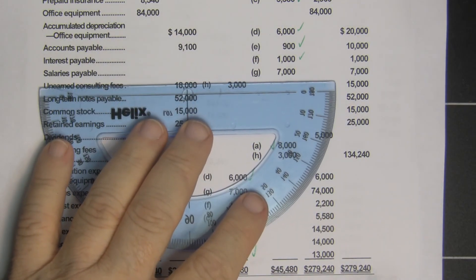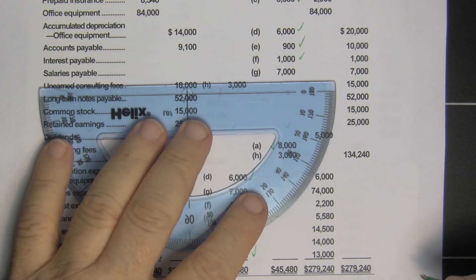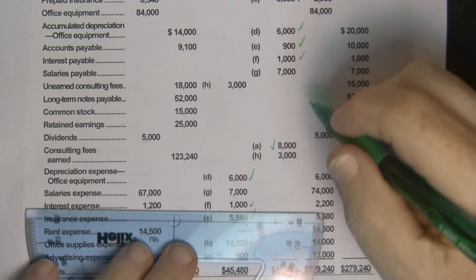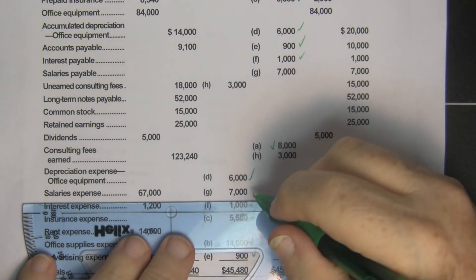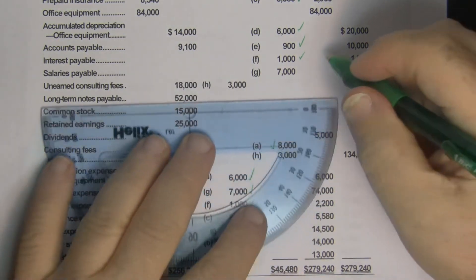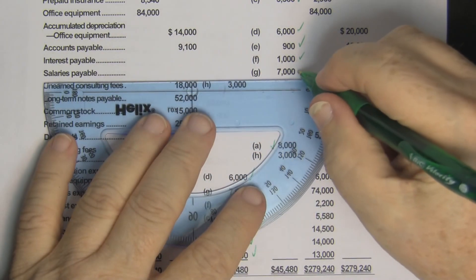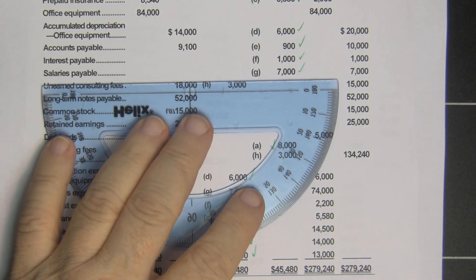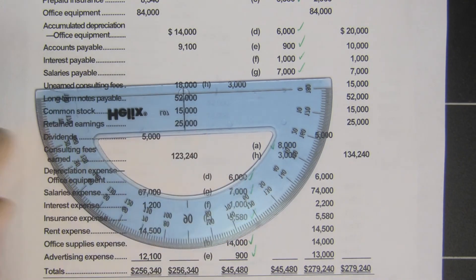Salaries payable is our last adjustment. We have seven thousand dollars that we didn't pay yet, so that's a seven thousand dollar debit to salary expense and a credit of seven thousand dollars to salaries payable.